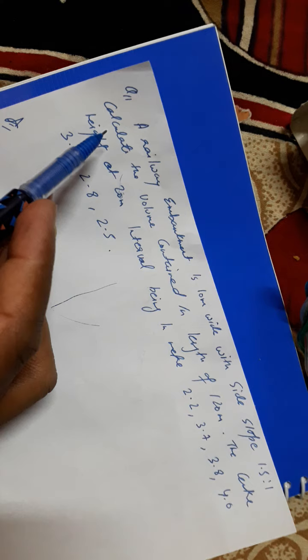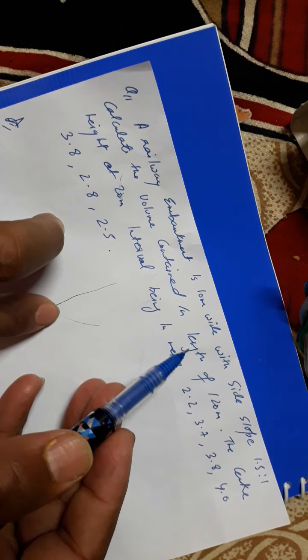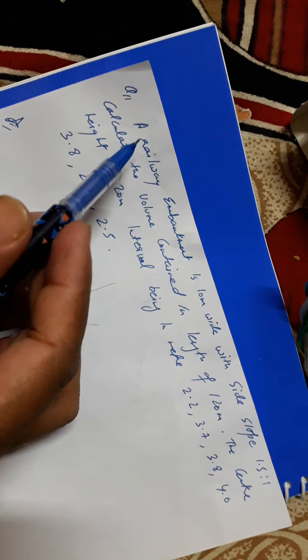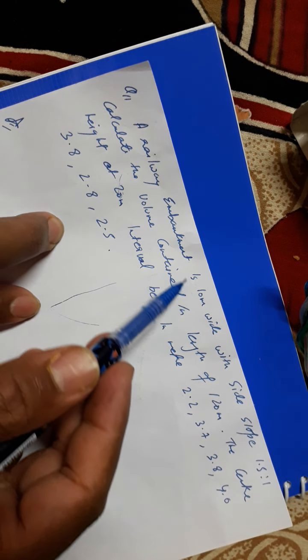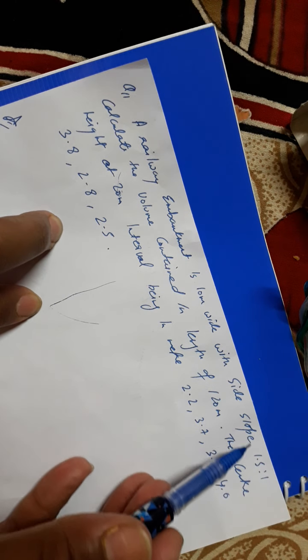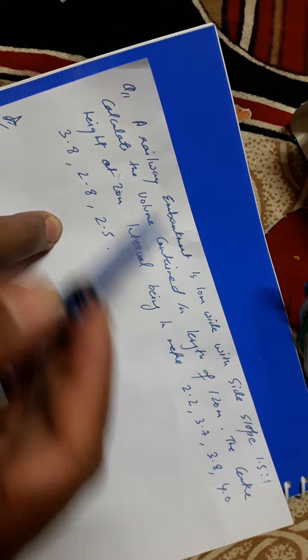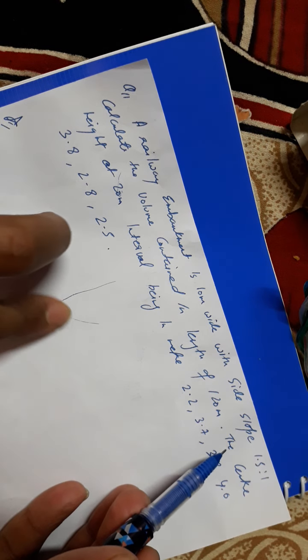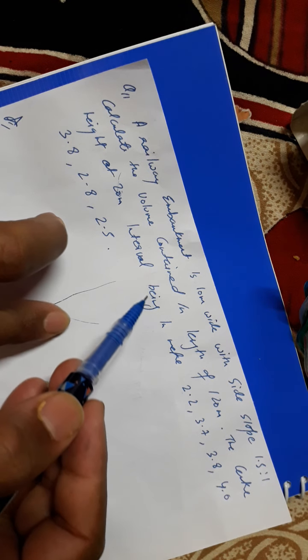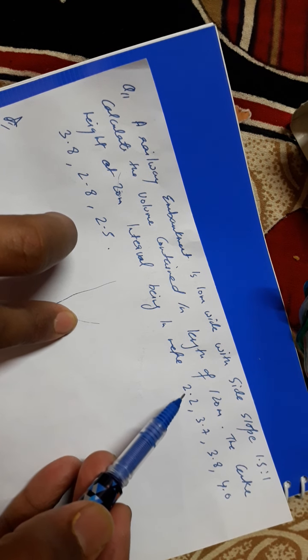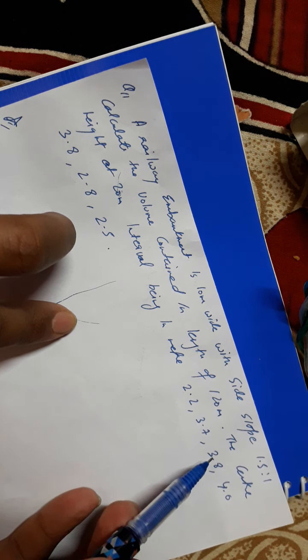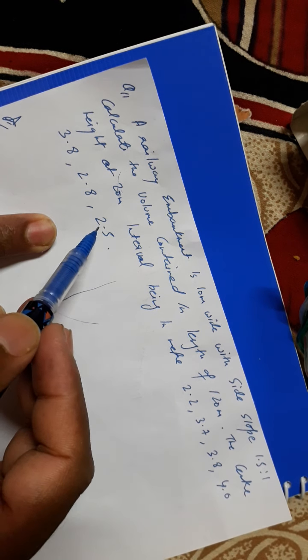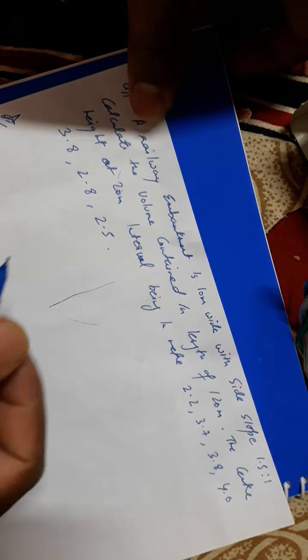In this question, we have to calculate the volume contained in the length of 120 meters. Let's read the question. A railway embankment is 10 meter wide with side slope 1.5 ratio 1. Calculate the volume contained in length of 120 meter. The centre height at 20 meter interval being in meters is 2.2, 3.7, 3.8, 4.0, 3.8, 2.8 and 2.5. So let's do this question.